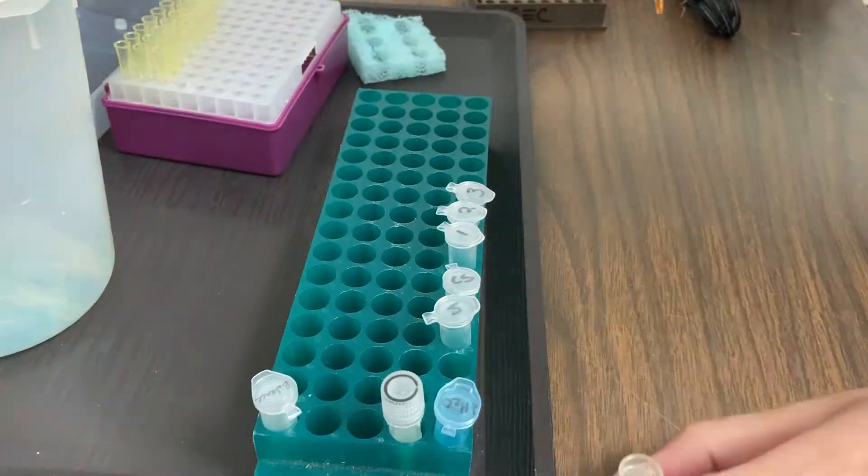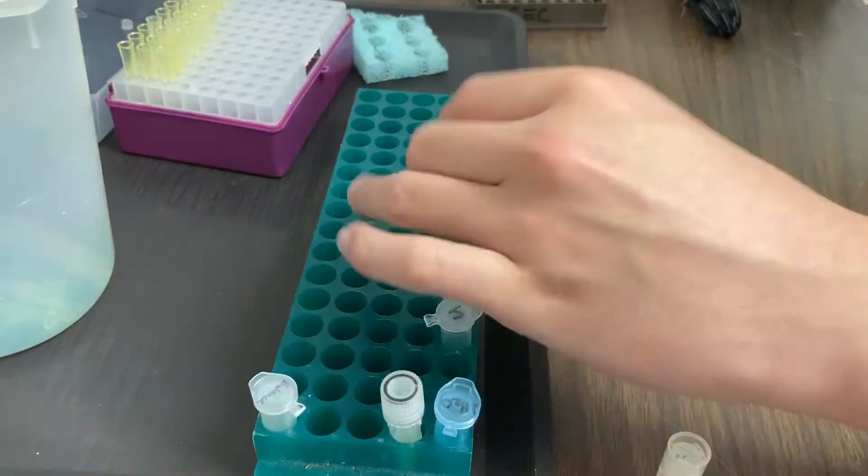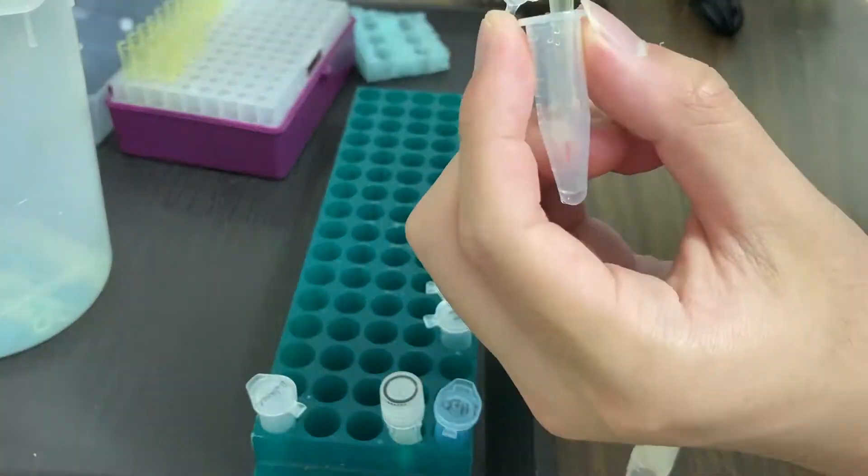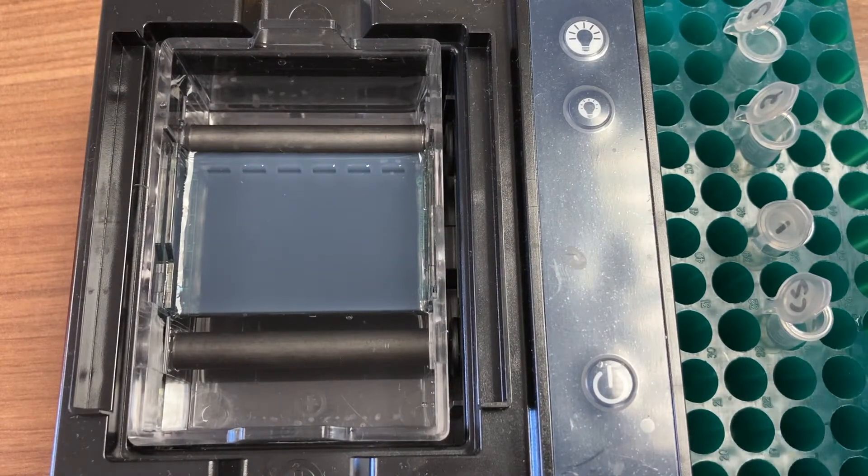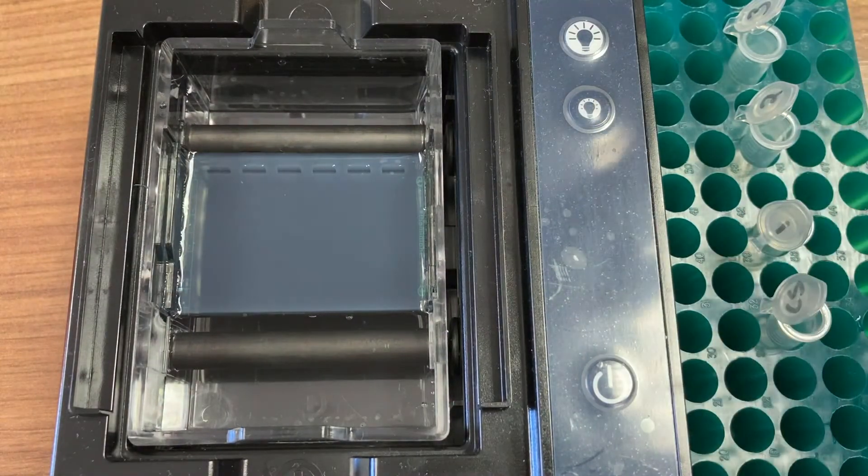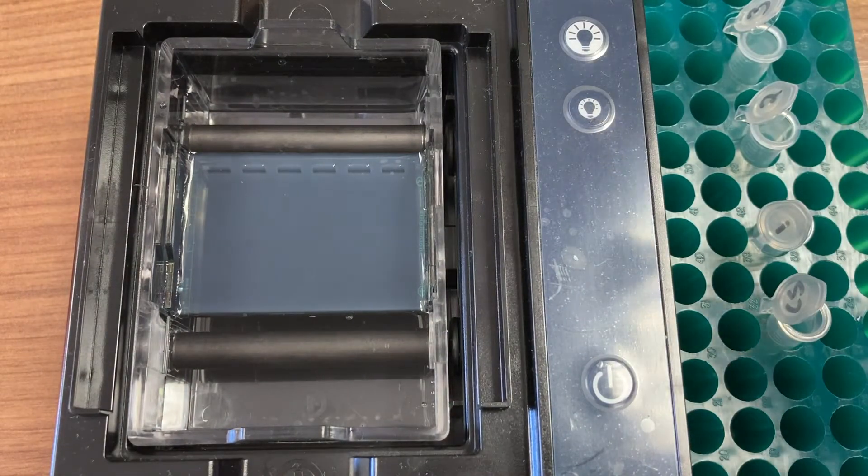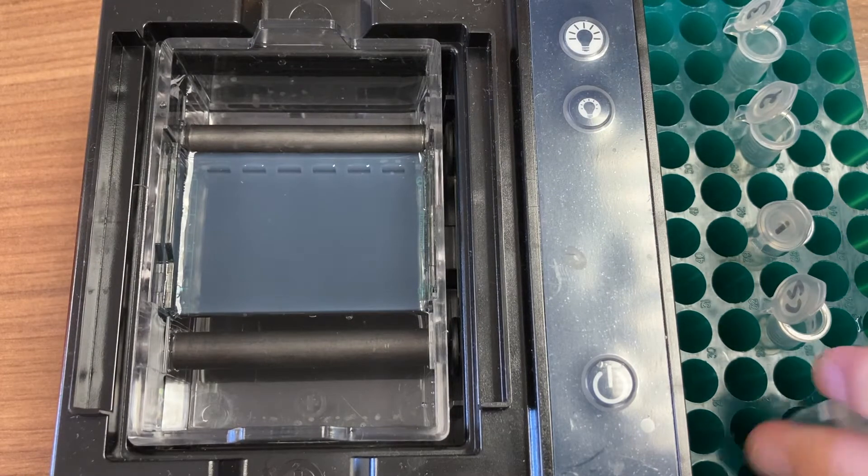We've finished adding our loading dye to each sample, and now we're ready to load our DNA onto the agarose gel. We're going to add our samples to the agarose gel that's here in the electrophoresis system. You can see it looks a bit like jello sitting in there.